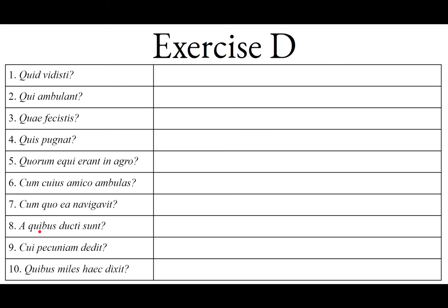Sententia octava: A quibus ducti sunt. A plus the ablative marks personal agent, because the verb is passive voice. By whom — and it's plural whom, though English can't tell the difference — were they led? By whom were they led?